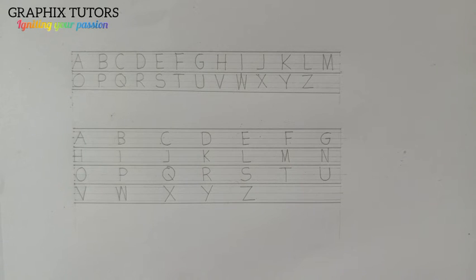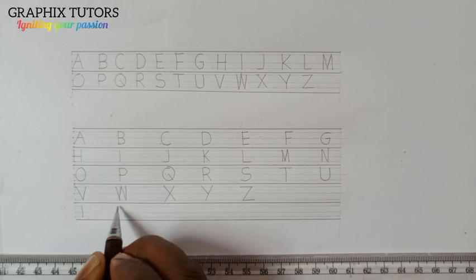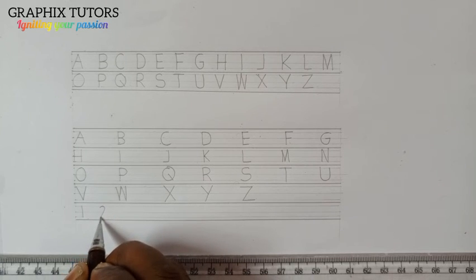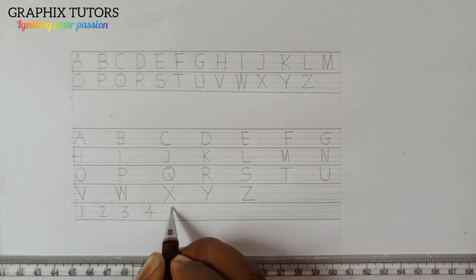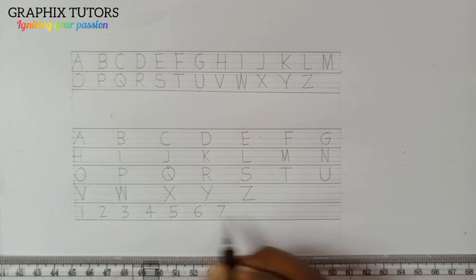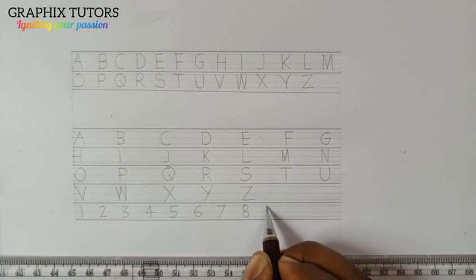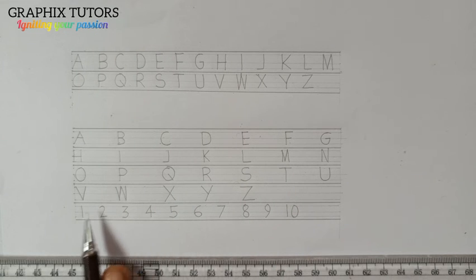Now the next thing you should know is how to write your numerics — the figures. The same procedure applies. So we have 1 written this way, then 2, then 3, then 4, then 5, then 6, then 7, then 8, then 9, then 10. Once you start they should be evenly spaced. This is how you do your lettering for numerics.